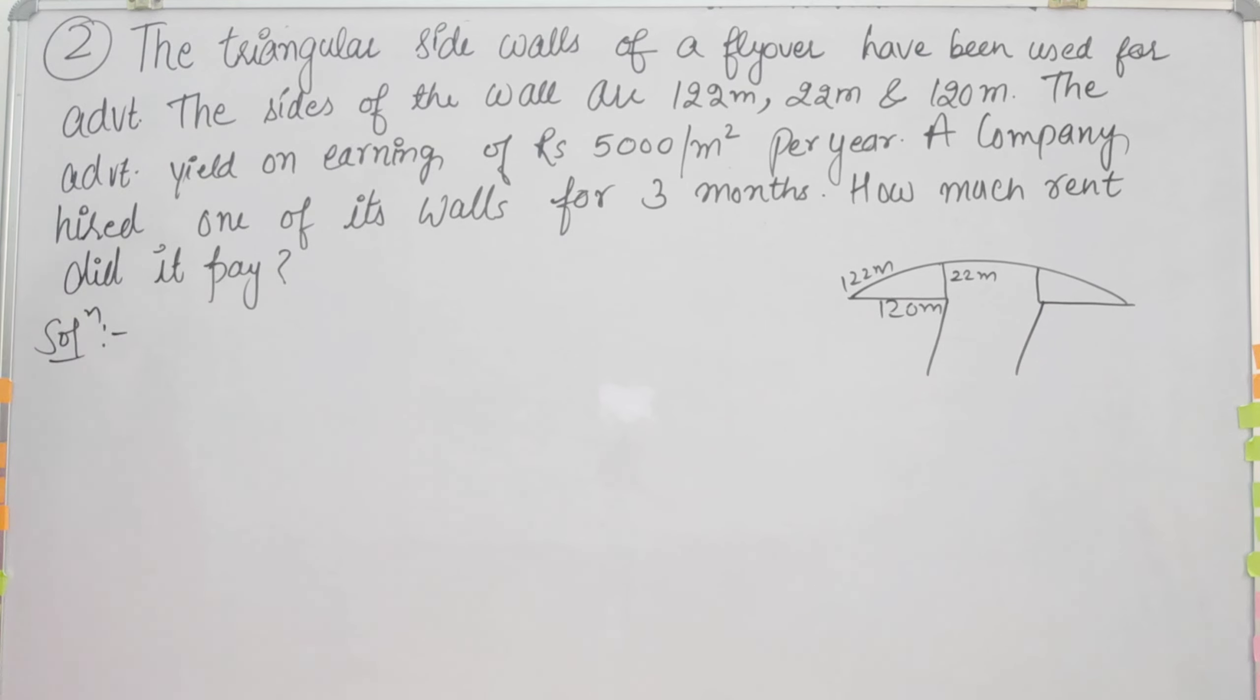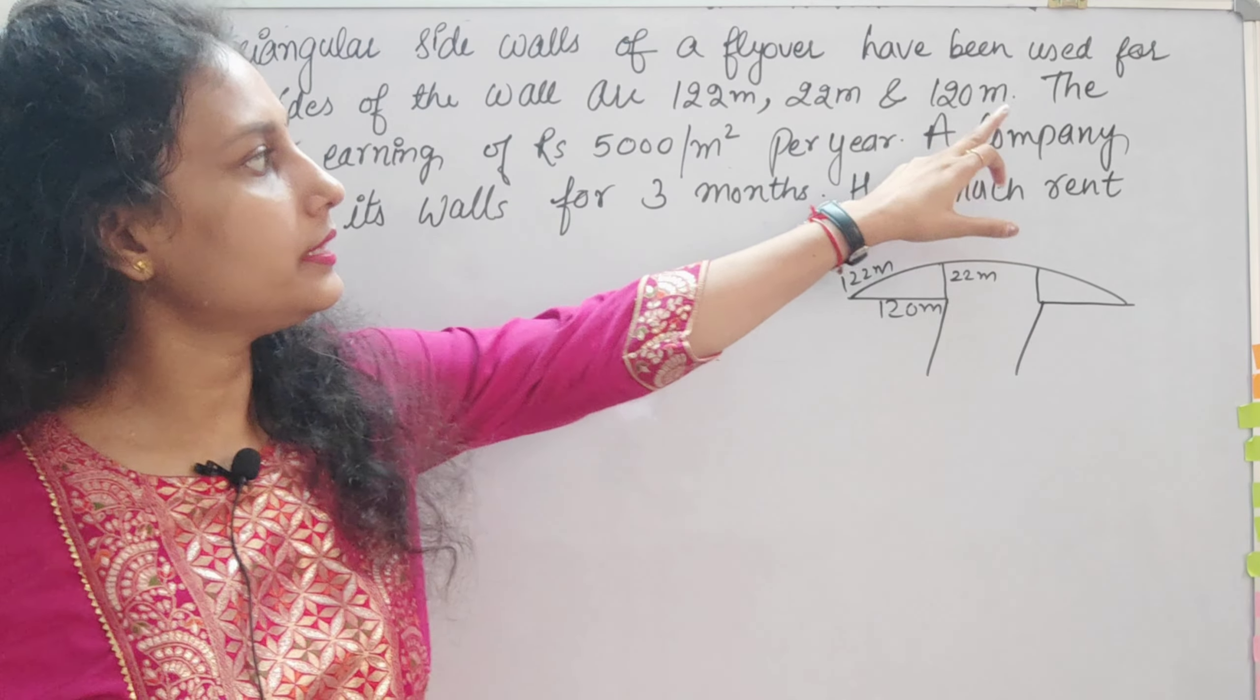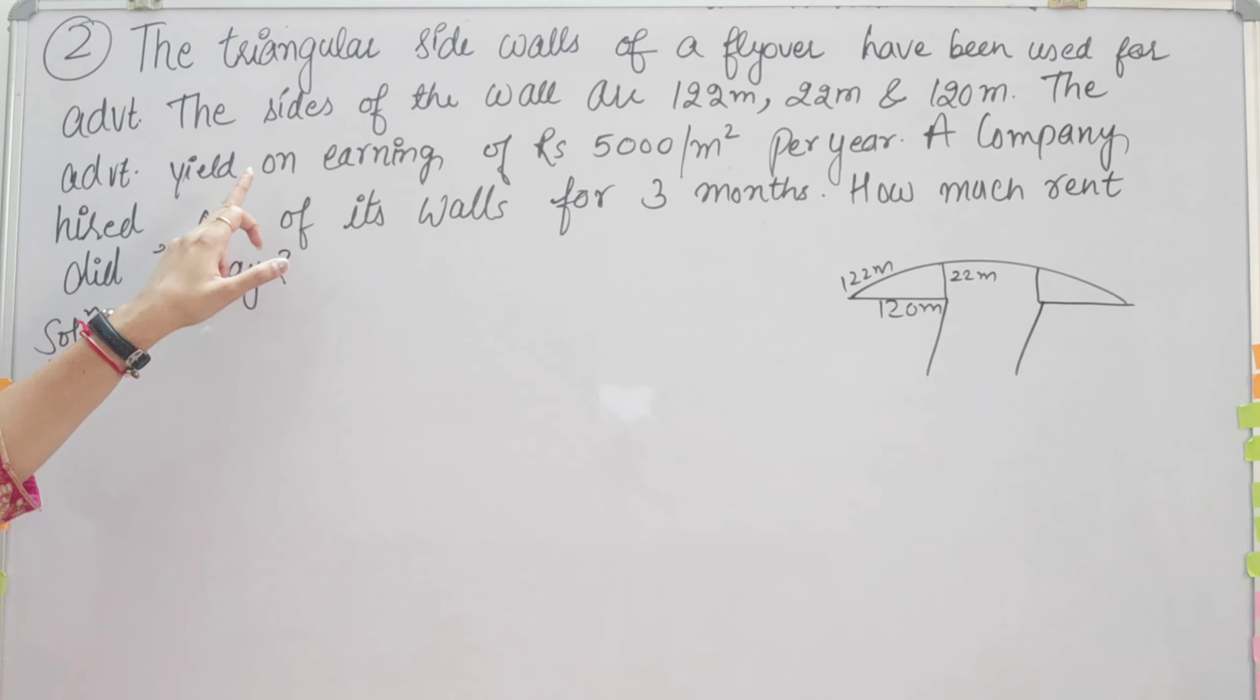The triangular sides are given, and the advertisement yield an earning of Rs. 5000 per meter square per year. A company hired one of its walls for 3 months. How much rent did it pay?